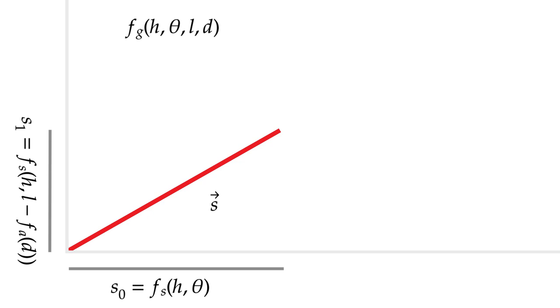For this experiment, H equals 10 and 11 sixteenths, L equals 37, and D equals 24, giving us FG of 10 and 11 sixteenths, theta, 37, and 24. Now that we know what to expect on the globe model, we can derive what distance shadows would be on the flat earth model.